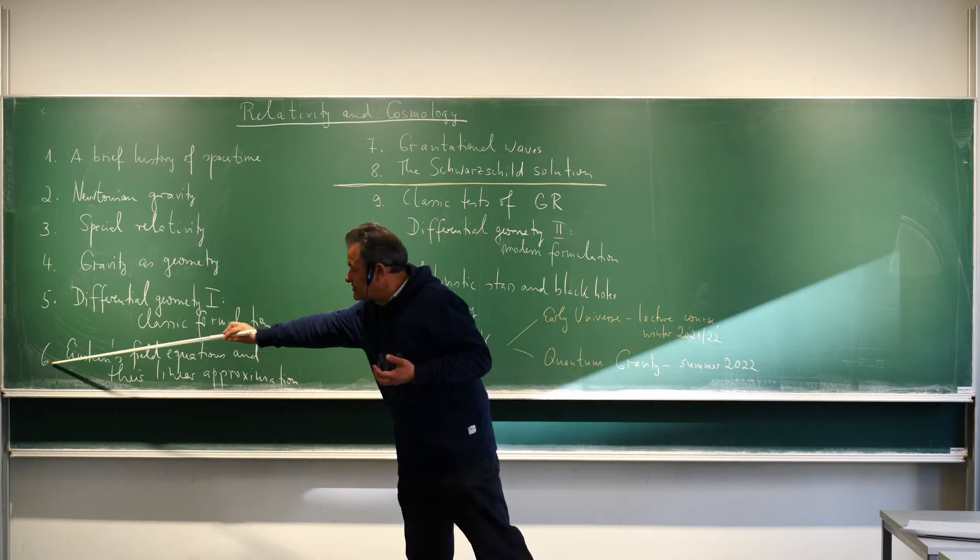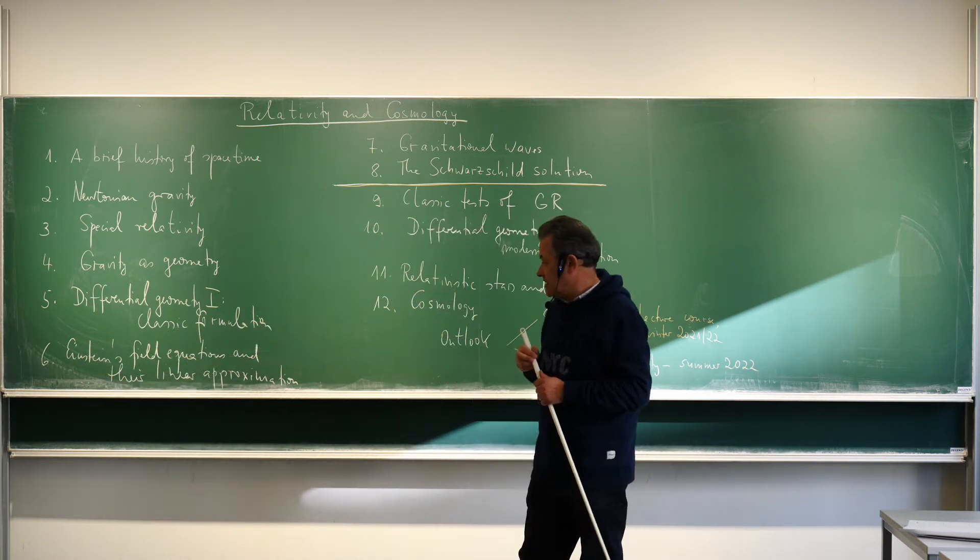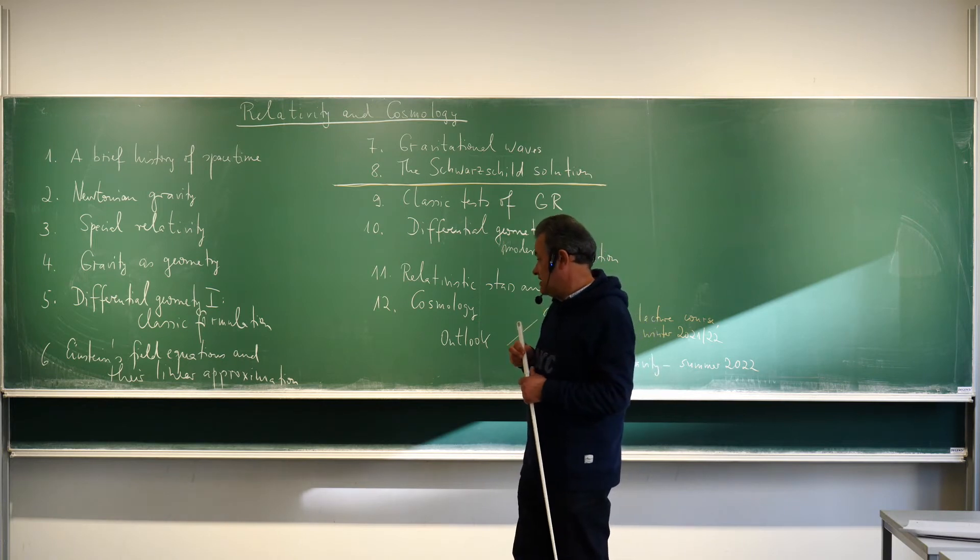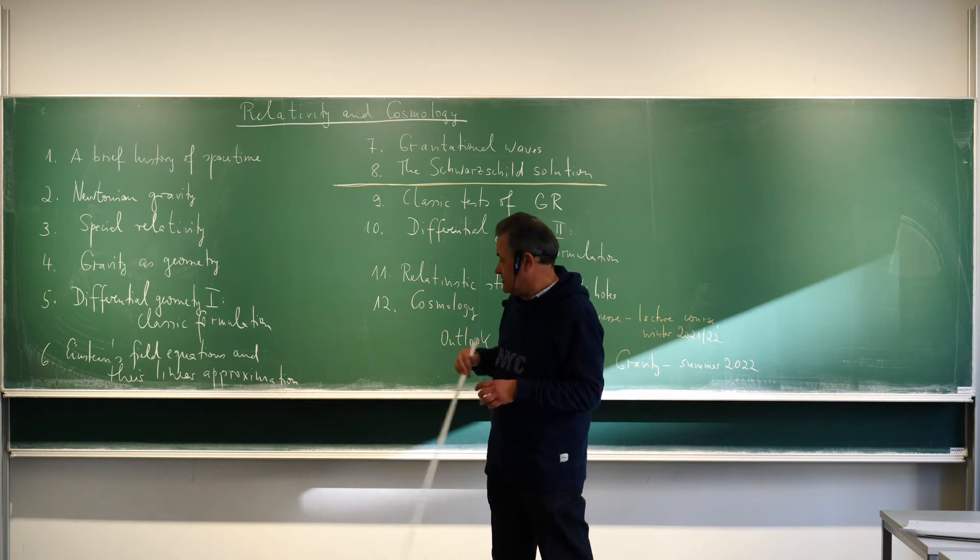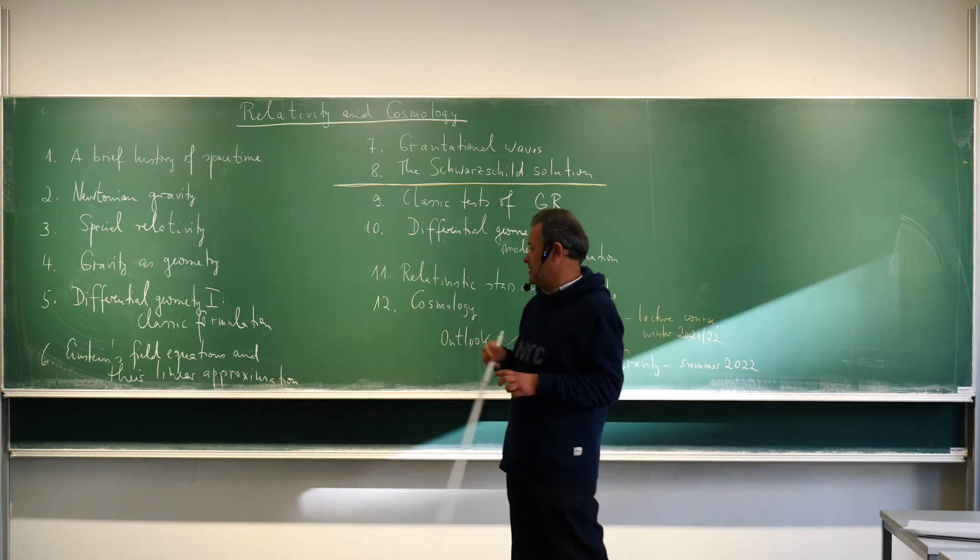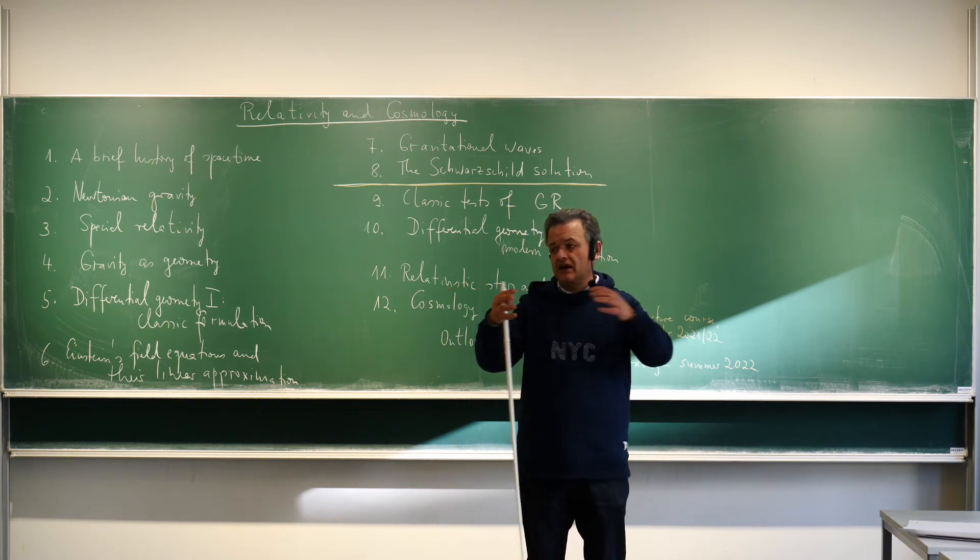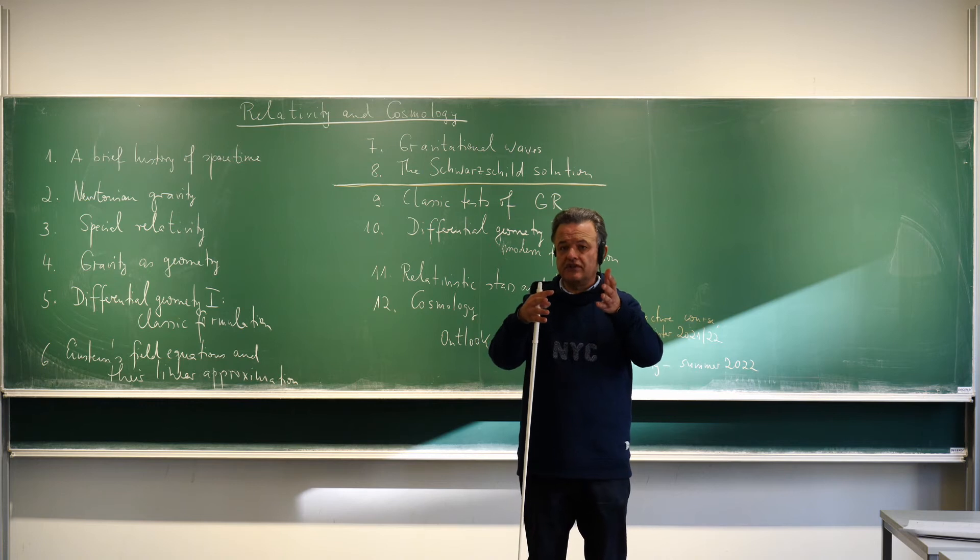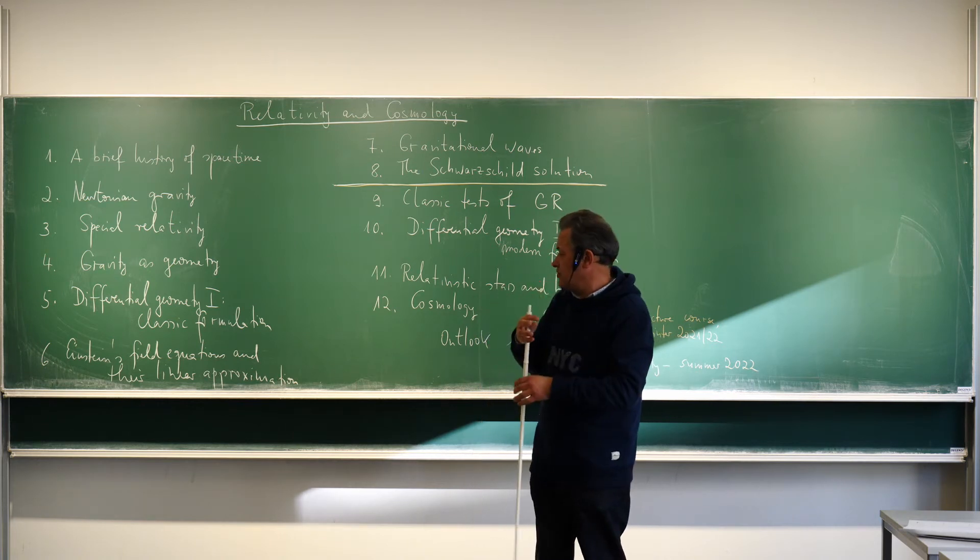Then the central chapter certainly is chapter six where I presented Einstein's field equations and discussed their structure and discussed the linear approximation out of which also the Newtonian approximation evolved. So we have really a continuous line from the general theory of relativity to the linearized approximation and to Newtonian gravity.